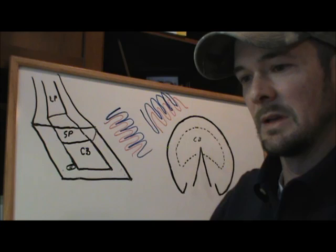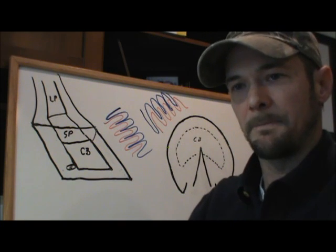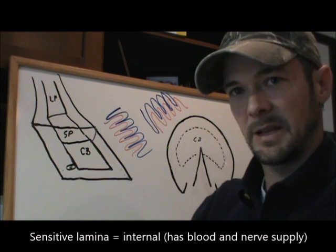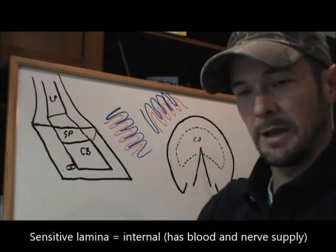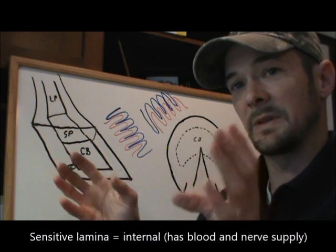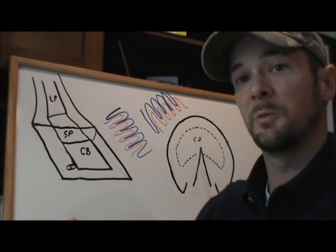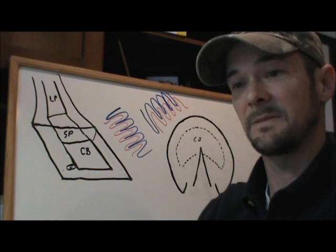So let's talk about lamina. There's two main types we're going to discuss today. Sensitive lamina that I'll draw in red. It's more on the internal aspect of the foot, has blood supply, has innervation. When a horse has laminitis, that's the stuff that's inflamed.